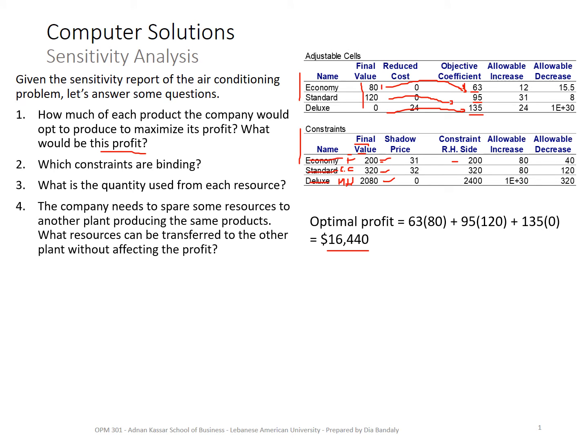The company wants to spare some of its resources without affecting its profit — for example, to give to a sister company. We look for which resource is not fully used. If I take some of the fans, that would affect the optimal solution because fans is a binding constraint — all available fans were used to maximize profit. So we look for resources with slack, which is man hours. The slack is 2,400 minus 2,080, giving a slack of 320. So we can spare 320 man hours.